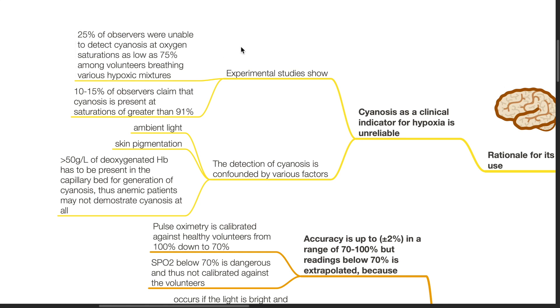10-15% of observers claim that cyanosis is present at saturations greater than 91%. The detection of cyanosis is confounded by various factors such as ambient light, skin pigmentation, and more than 50 grams per liter of deoxygenated hemoglobin has to be present in the capillary bed for generation of clinical cyanosis. Thus, anemic patients may not demonstrate cyanosis at all.